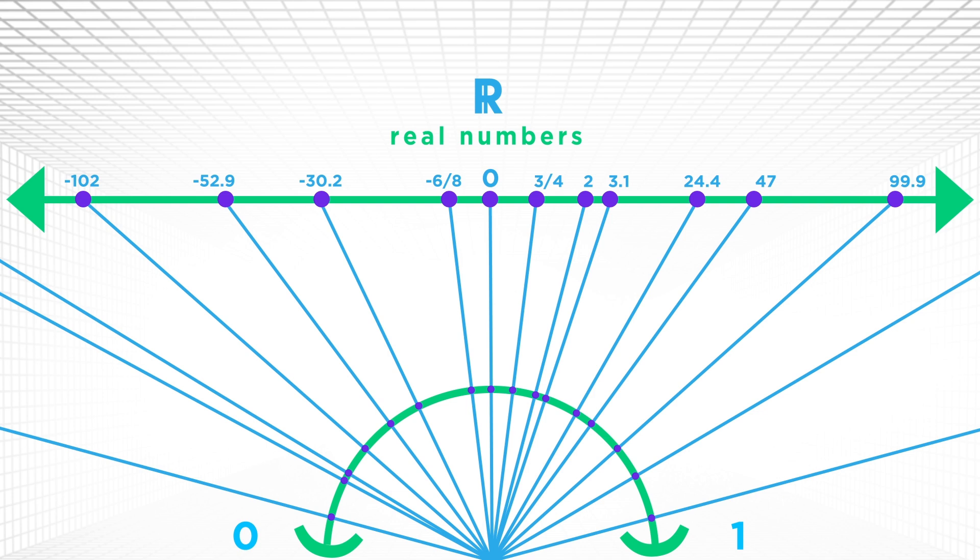The interval 0, 1 is the same size as all the real numbers, and so they belong on the same spot on the hierarchy of infinities. So now we have a smallest infinity, the natural numbers, and a bigger one, the real numbers.